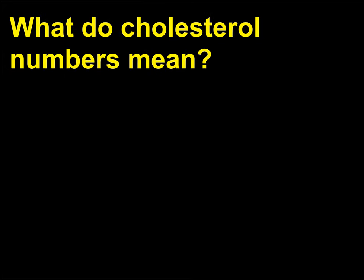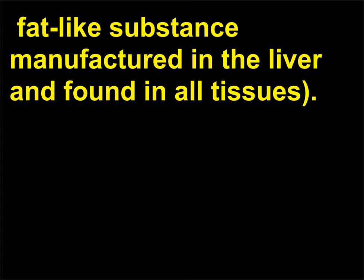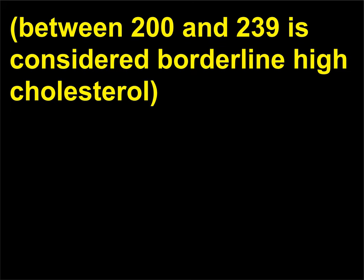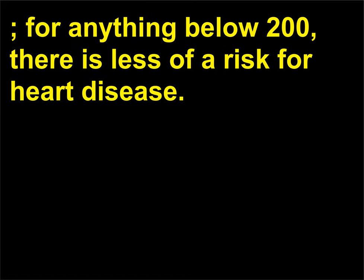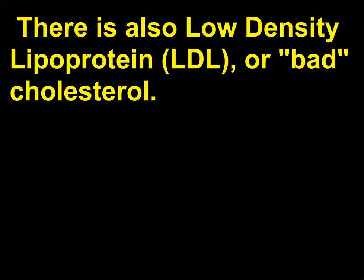What do cholesterol numbers mean? Cholesterol numbers indicate the amount of cholesterol in the bloodstream. Cholesterol is a waxy, fat-like substance manufactured in the liver and found in all tissues. For humans, a total cholesterol number above 200 means there is an increase in the risk of heart disease. Between 200 and 239 is considered borderline high cholesterol. For anything below 200, there is less of a risk for heart disease. But total cholesterol is not the only number to know. There is also low-density lipoprotein, LDL, or bad cholesterol.